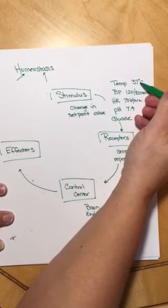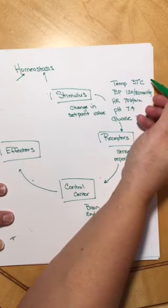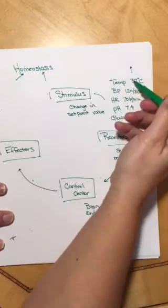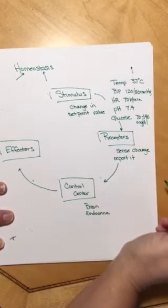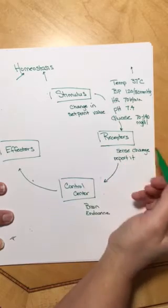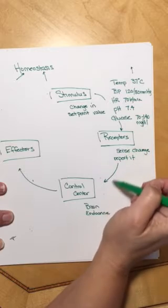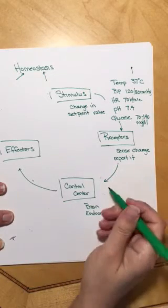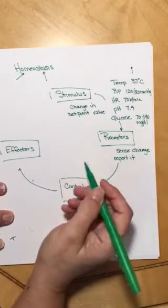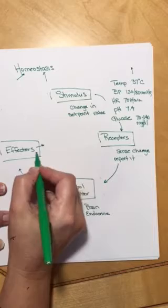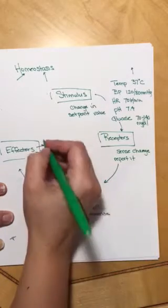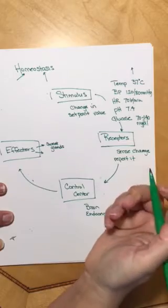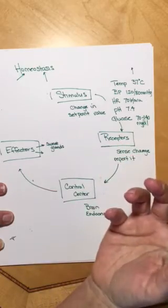Let's talk about temperature for a minute. Say I was running around and working out, and my body temperature started to increase — that's a stimulus. The receptors, in this case thermoreceptors, are going to pick up that increased body temperature and report it to the part of the body that can do something about it. For temperature, that's the hypothalamus in the brain, and the hypothalamus is going to tell effectors to fix the problem. So what happens when you start working out? Well, you start sweating. The effectors are actually sweat glands — sweat glands produce sweat, make the surface of your skin wet, and then the evaporation of that sweat helps cool you down.